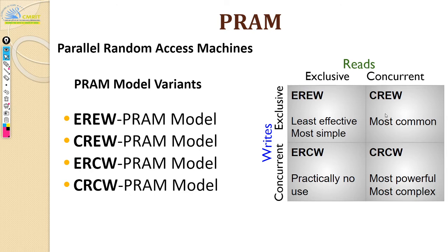CREW is concurrent read and exclusive write, and it makes a lot of sense. When you have data in a memory location, any processing element can read it — it is not going to affect the data. But if somebody wants to write, somebody has to own it. If two people write at the same time, we are going to have a race condition or some synchronization issue. To avoid that, for writing you allow only one processor to own that data and then write. You would have heard of semaphores, test-set-and-lock, and TSL instructions in operating systems — those things come into picture here.